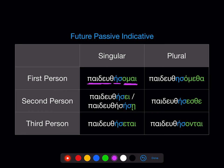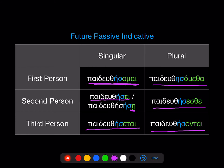For the future middle, these are those primary middle passive endings. We're going to end up with paideuthesomai, meaning 'I will be taught'; paideuthese, with its alternative forms; paideuthesetai; paideuthesometha; paideuthesesthe; paideuthesontai.